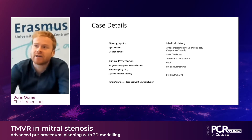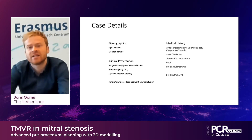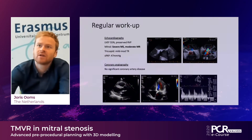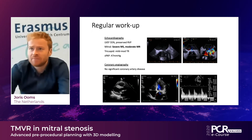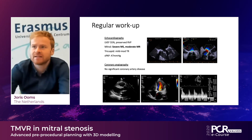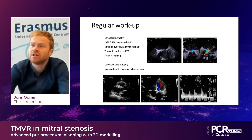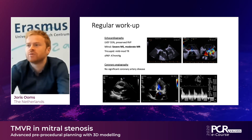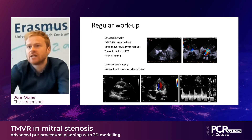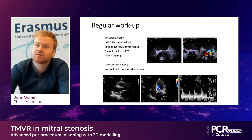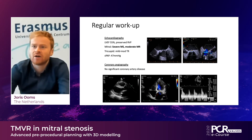Other past records showed a surgical mitral valve repair plus annuloplasty in 1981, AFib, TIA, gout, and a multinodular goiter. We looked at her echo and saw that she had an EF of 55%. The TEE we performed showed a degenerated mitral valve with at least moderate regurgitation and severe stenosis, with mean gradient up to 11 mmHg. She also had moderate TR and elevated right ventricular pressures, but no significant coronary artery disease.